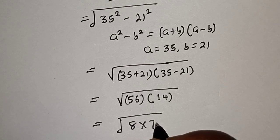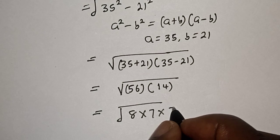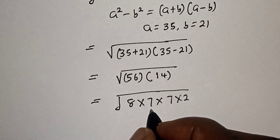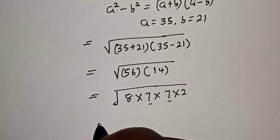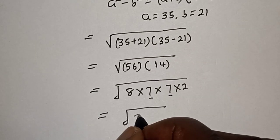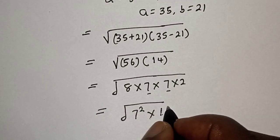Then this is equal to 56, which is 8 times 7, multiplied by 14, which is 7 times 2. So we have 7 here and 7 here. This is equal to square root of 7 squared multiplied by 8 times 2, which is 16.